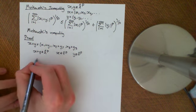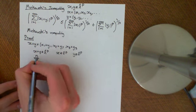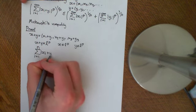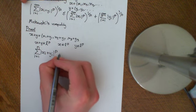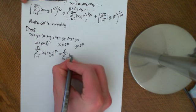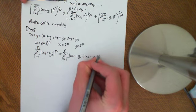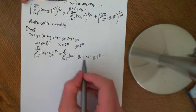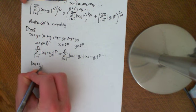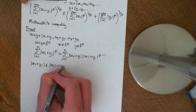The first step of the proof: consider the finite sum from i equals 1 to n of |xi + yi|^p. This equals the summation from i equals 1 to n of |xi + yi| times |xi + yi|^(p-1) — nothing special, just pulling a single factor out. Now we use the triangle inequality: |xi + yi| ≤ |xi| + |yi|.